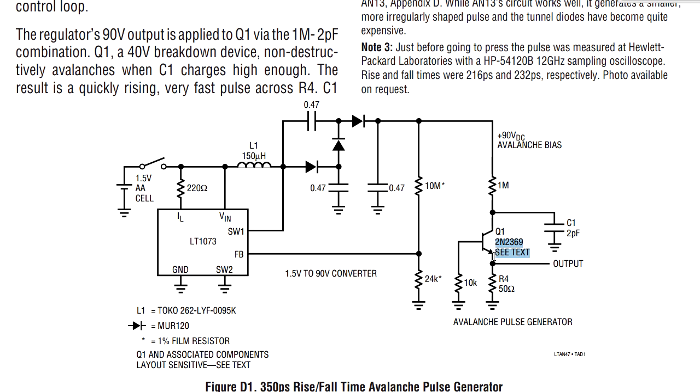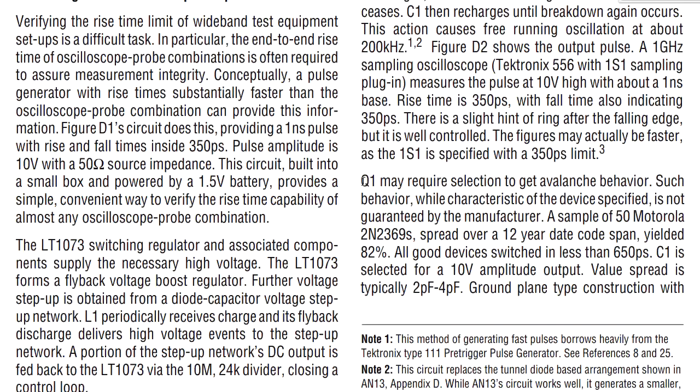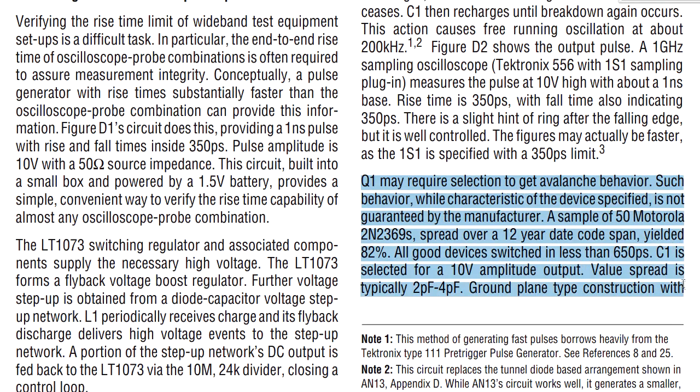That's the exact same transistor that Manute is using here. And it's got the metal TO5 package of course. It still comes in that. But you really have to hand select this. And it says see text there for a reason. So let's go up and take a look at that. And here it is. Q1 may require selection to get avalanche behavior. Such behavior, while characteristic of the device specified, is not guaranteed by the manufacturer. A sample of 50 Motorola 2N2369 spread over a 12-year date code span yielded an 82% result.